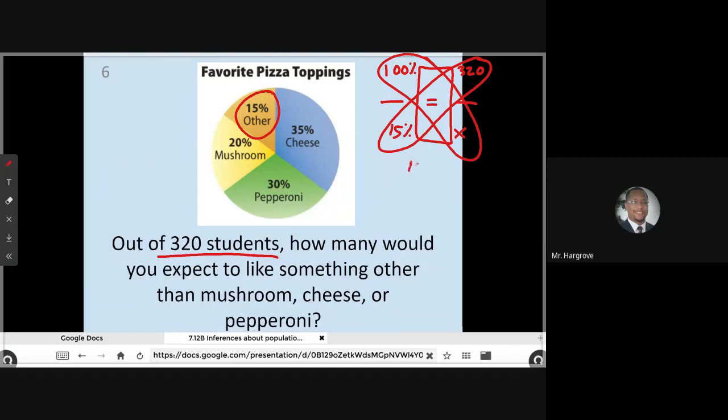100 times x is going to give me 100x equals 320 times 15. So that is 100x equals 4,800. And then I'm going to divide both sides by 100, which is the same thing as simply knocking off two zeros. So I would say x equals 48. That is my prediction. Out of 320 students, we would say 48 of them would like something other than mushroom, cheese or pepperoni.